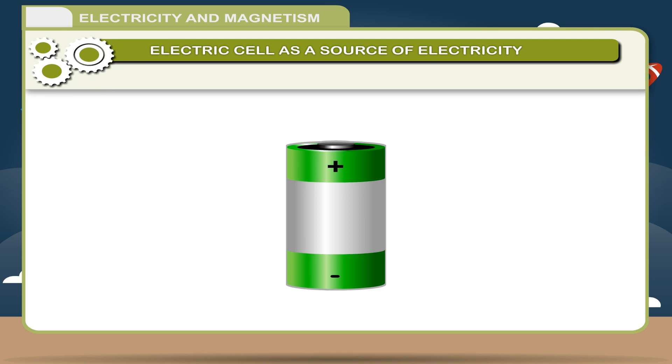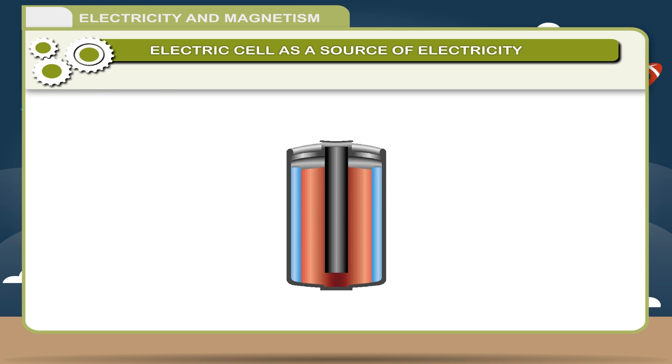If you look at the cell carefully you will find certain markings on it. On one side of the cell there is a positive sign and on the other side you will find a negative sign. Hence, a cell has two terminals, a positive and a negative terminal. An electric cell produces electricity by chemical reactions taking place between the chemicals placed inside the body of the cell. When the chemicals in the electric cell are used up, the electric cell stops producing electricity.